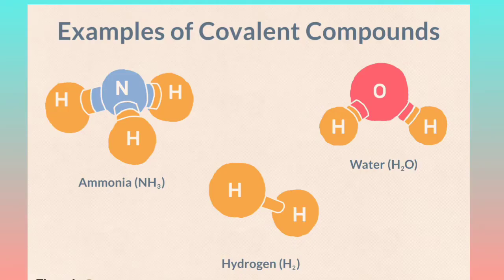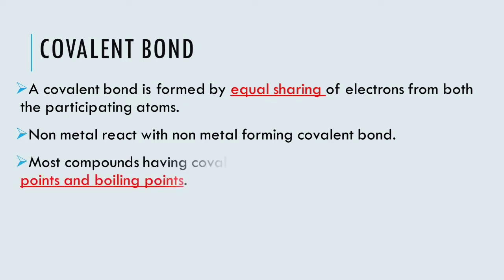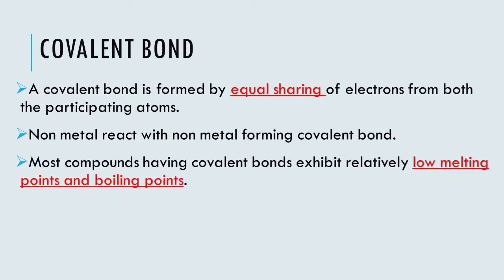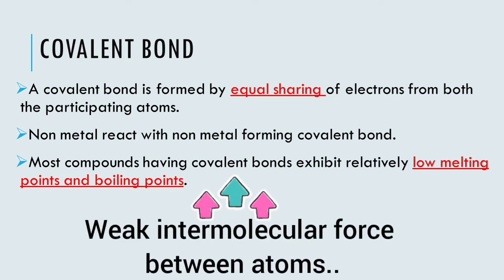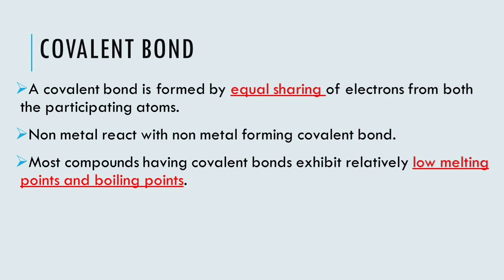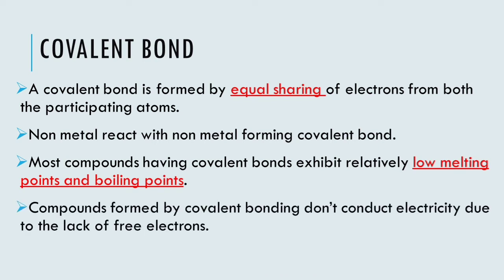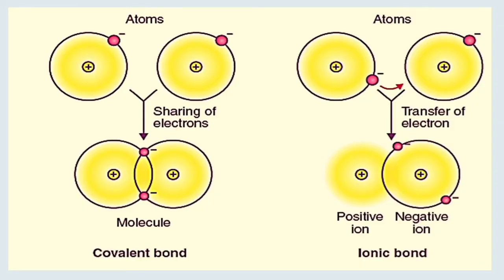Covalent compounds usually have low melting and boiling points. This is because even though their bonds are strong, the intermolecular forces are weak. Similarly, covalent compounds are also poor conductors of electricity, since the electrons are shared between the atoms and no charged particles are formed, resulting in poor conductivity.